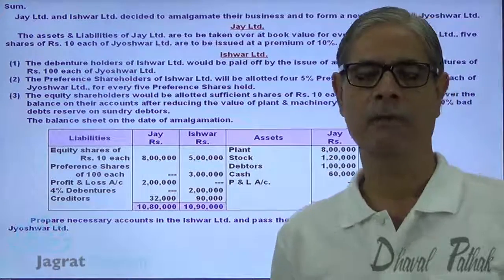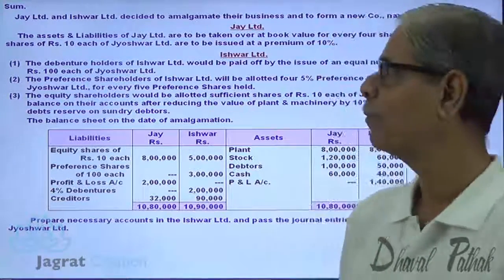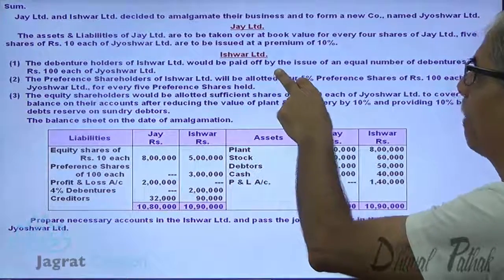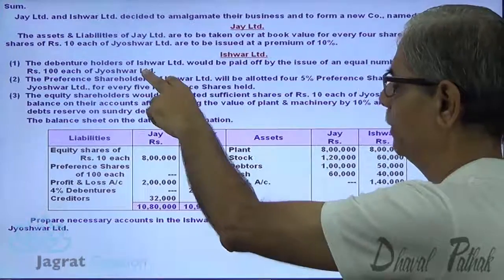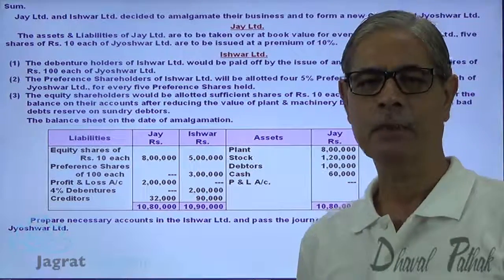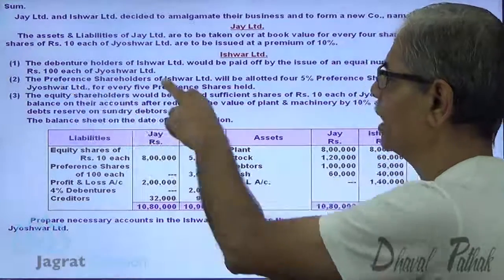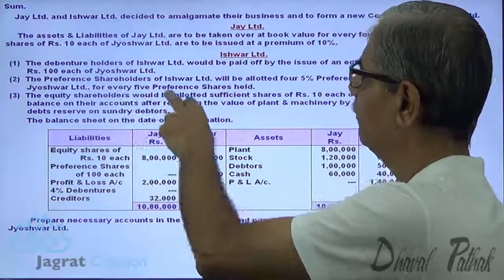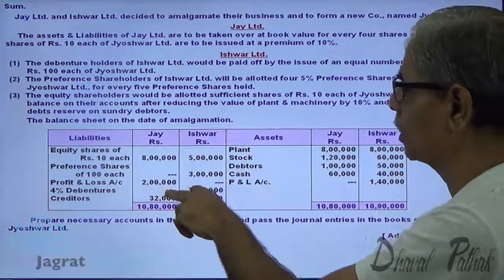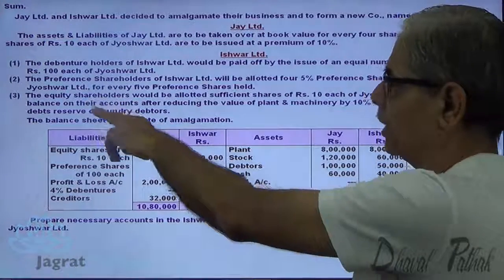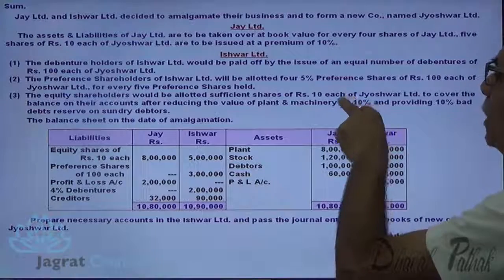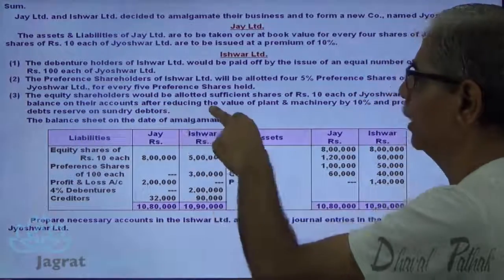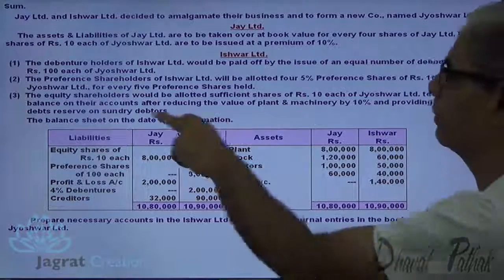The purchase consideration will be worked out on the basis of total payment made to the vendor. In case of Ishwar Limited, the debenture holders will be paid by issue of equal number of debentures of rupees 100 in Jai Ishwar Limited. So debenture holders will be given in exchange the debentures of the new company. Preference shareholders of Ishwar Limited will be allotted 5% preference shares of rupees 100 each for every 5 preference shares held.